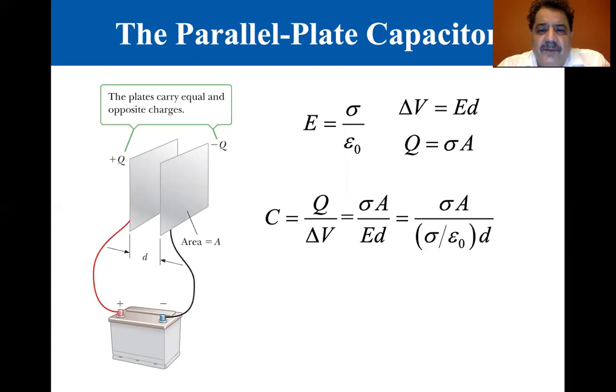So C equals Q over delta V. Well, if delta V is equal to ED and Q is equal to sigma A, and E is equal to sigma divided by epsilon zero times D, the sigmas cancel, and you end up with C equals epsilon zero A over D.